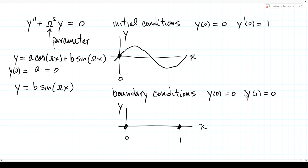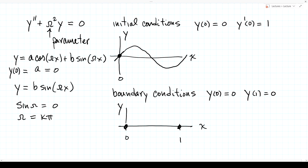Our second condition is y(1) = 0, which gives b·sin(ω) = 0. We don't want b = 0 because that gives the trivial solution, so instead sin(ω) = 0. That's only true for certain values of ω — the integer multiples kπ. For k = 1, we get the one-bump solution; for k = 2, the two-bump solution; and so on. So for various values of the parameter k, we get solutions ωₖ, and we'll have an infinite family of sine-wave solutions.